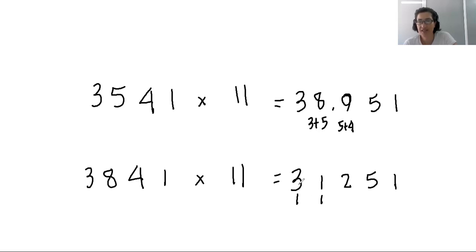So I can erase this, and instead of having 31 plus 11, now it's 4, 2, 42. So 3841 times 11 is 42,251.